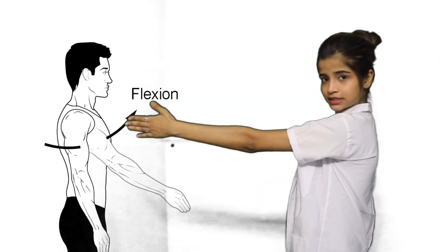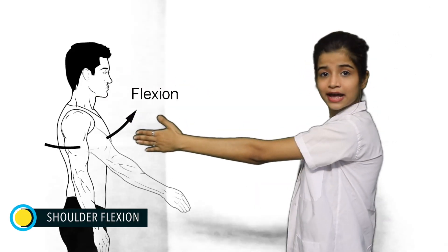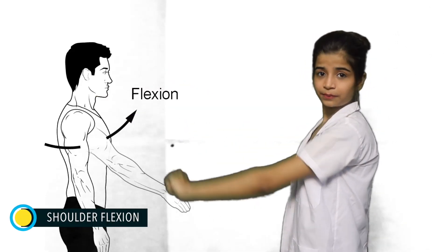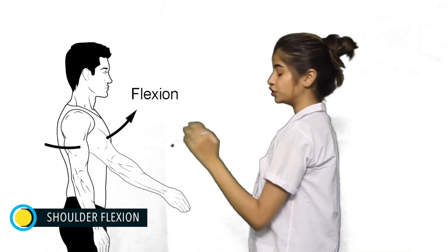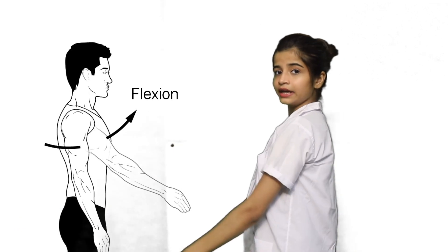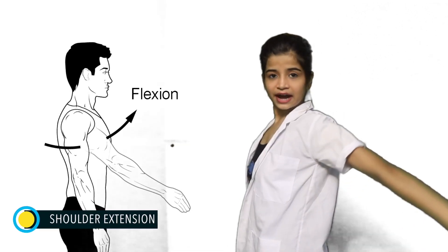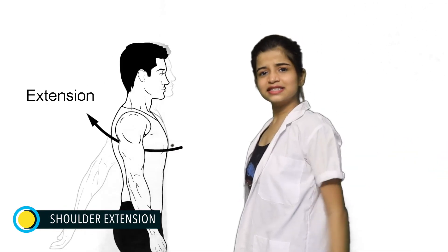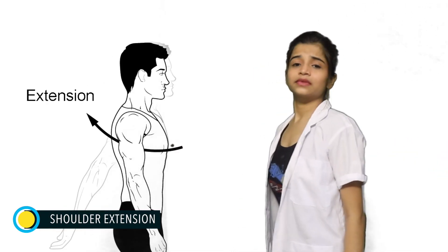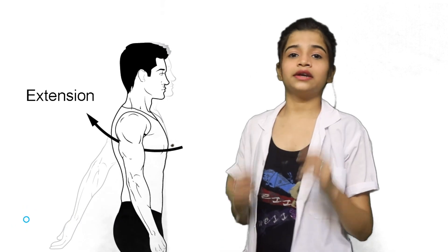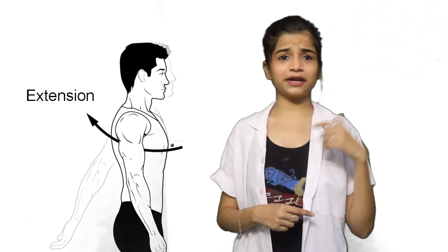One of the daily-use movements is moving our hand in a forward direction like this, which is called flexion. And vice versa, moving your hand in a backward direction like this is called extension. Now let me tell you about the midline of the body to explain further.